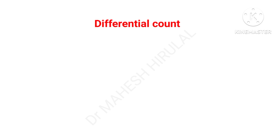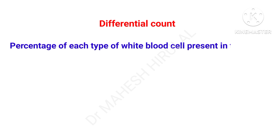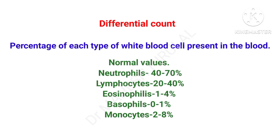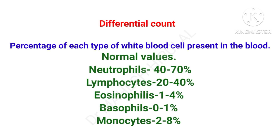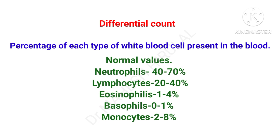Blood contains different types of WBCs. Differential count is the percentage of each type of WBC present in the blood. The normal values are: neutrophils 40–70%, lymphocytes 20–40%, eosinophils 1–4%, basophils about 1%, and monocytes about 2–8%. This is generally expressed in percentage.